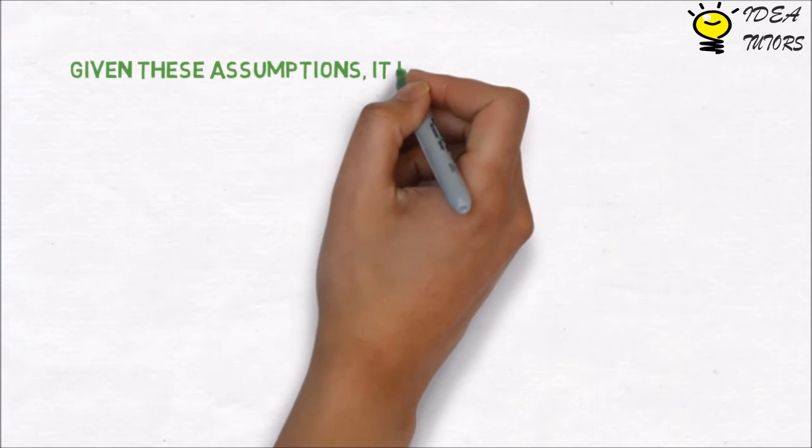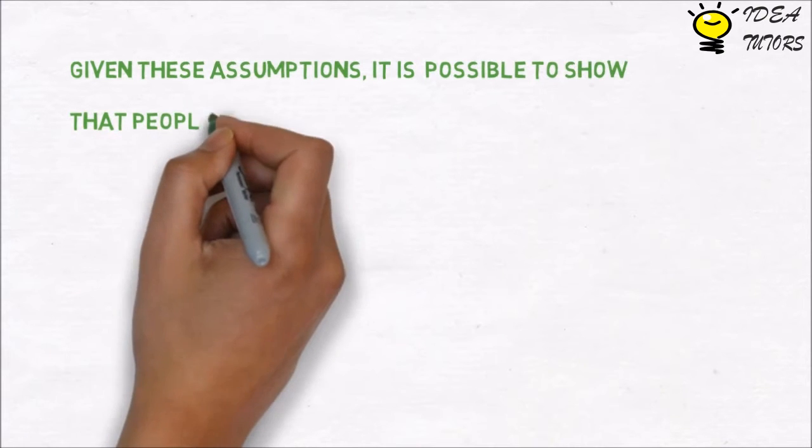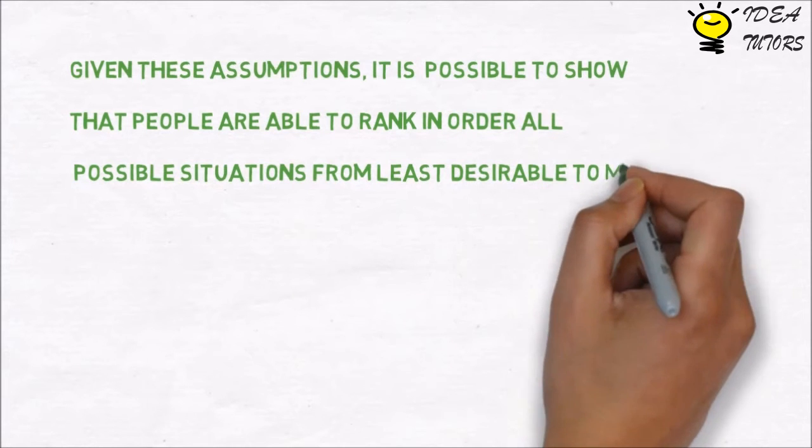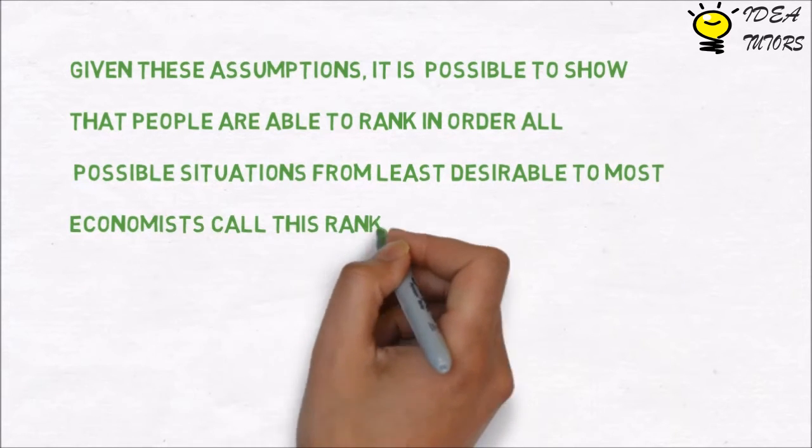Given these assumptions, it is possible to show that people are able to rank in order all possible situations from least desirable to most. Economists call this ranking utility.